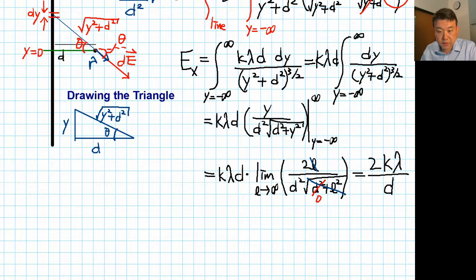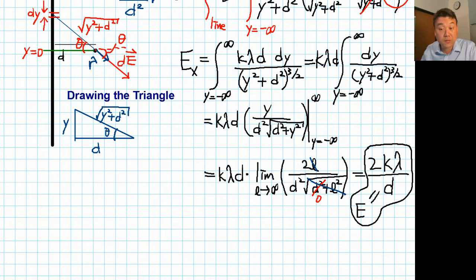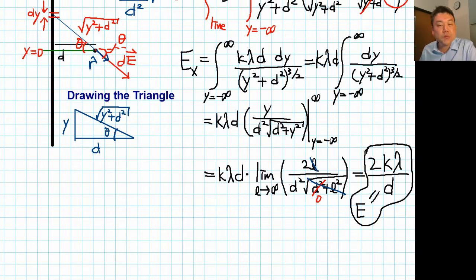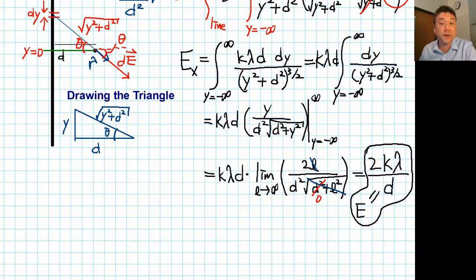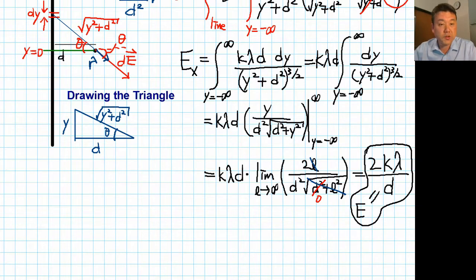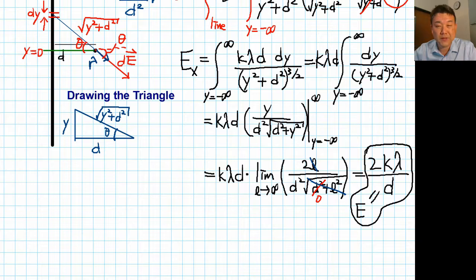This is a surprisingly simple result — 2k lambda over d is the magnitude of the electric field — but it took a lot of work to get here. There was even an integral that many would get stuck on in an exam. That's why we are covering Gauss's law — you'll see how much easier this problem becomes with Gauss's law. This is part one of the three-part lecture snippet illustrating calculation of electric field using integration, and the point is to show by comparison how much more difficult it is than using Gauss's law.